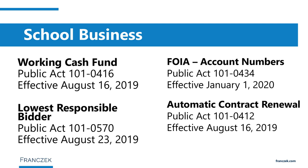There has also been a change to the lowest responsible bidder statute. The amendment addresses the section regarding purchase of natural gas from competitive bidding requirements. Previously the exception applied only when the cost was less than that offered by a public utility; now, districts are not required to bid even if the price is above the public utility when purchasing diesel, gasoline, oil, aviation fuel, natural gas, propane, lubricants, or other petroleum products. Essentially any fuel source is now exempt from bidding requirements.